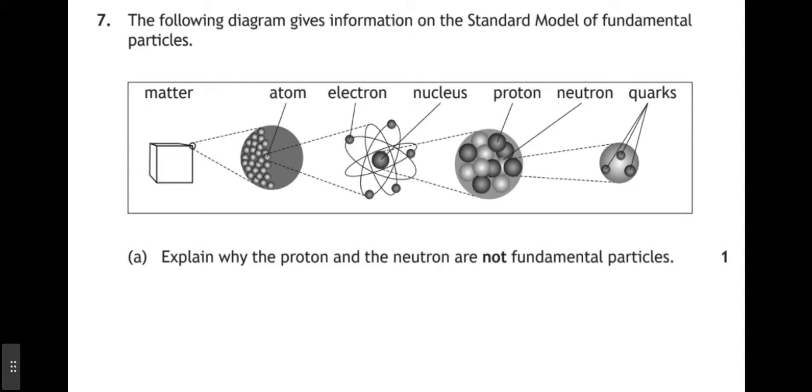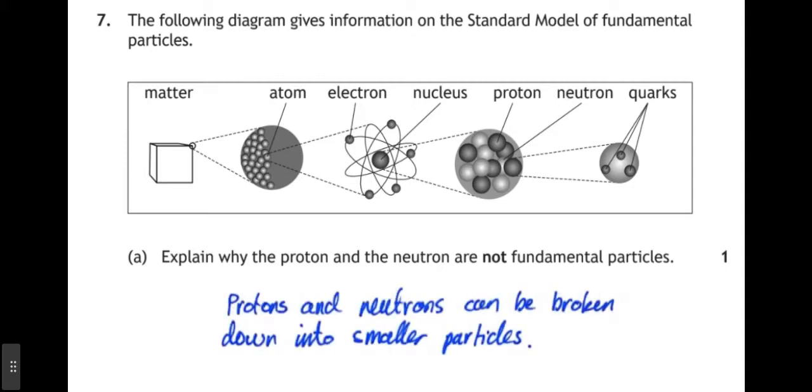We zoom in further and we can see inside the nucleus the protons and the neutrons. And then if we zoom in on one of those protons and neutrons, then we can see the quarks that make them up. So part A says, explain why the proton and neutron are not fundamental particles. Well, the answer is kind of in the question there. The proton is not the last stage of that process. Protons and neutrons can be broken down into smaller particles, the quarks. The quarks are fundamental particles because they cannot be broken down further.